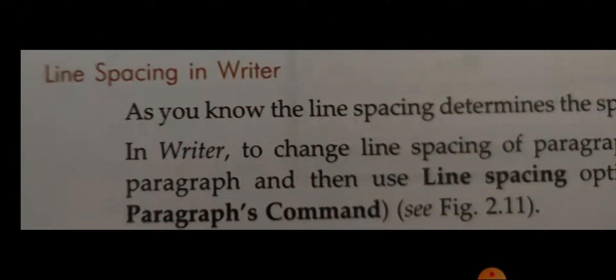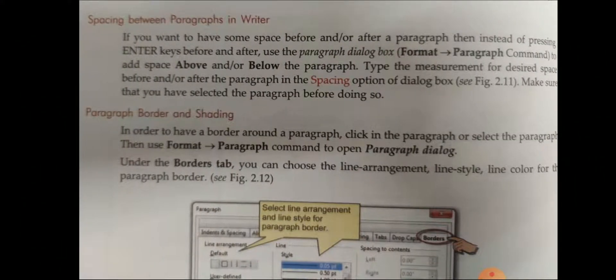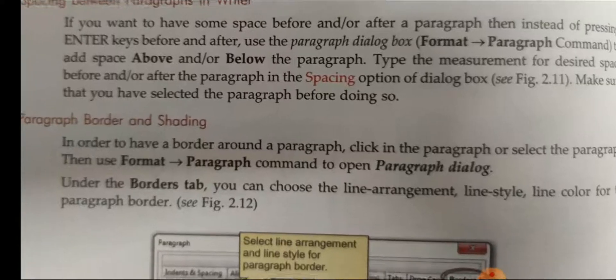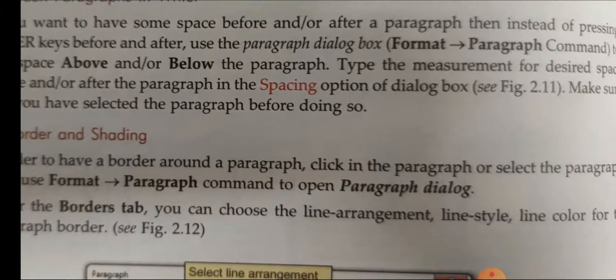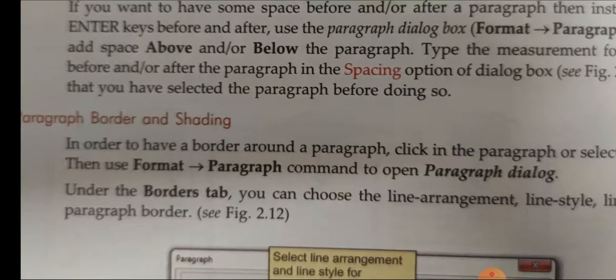Line spacing in writer means we can give space between lines when we are typing. We can give single space, double space, or one and a half — it depends on us. We can also set the spacing between paragraphs by going to the format menu and clicking on the paragraph command, and from there you can make changes.